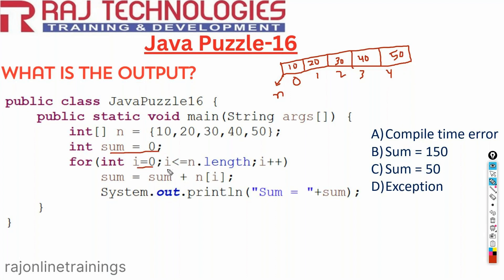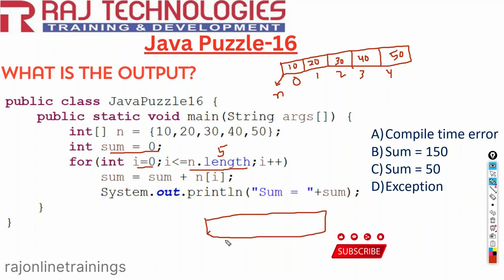0 less than or equal to n dot length — what is the value of n dot length here? The size of the array is 5, so n dot length is 5. So 0 less than or equal to 5, condition is true. Sum equal to sum plus n of 0, so the value of sum becomes 0 plus 10, which is 10. Again the loop repeats — since there is no curly brace, it takes only the first statement.